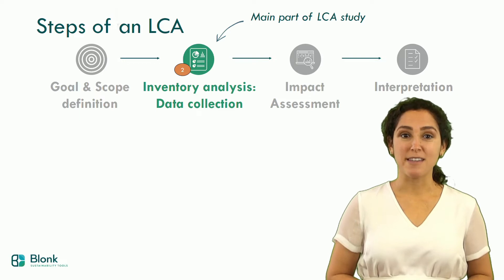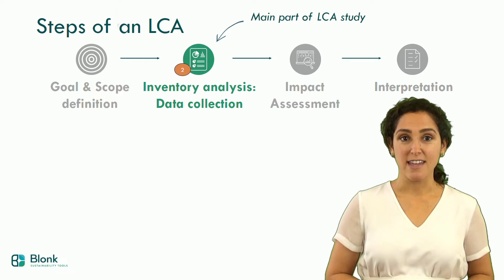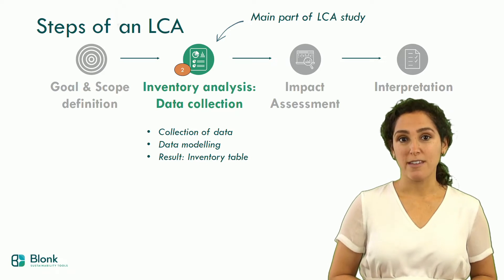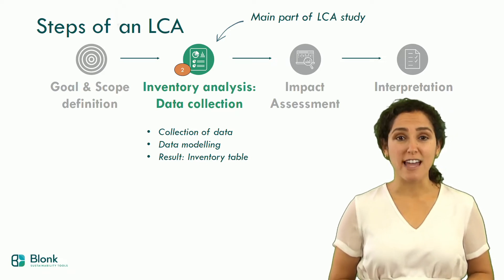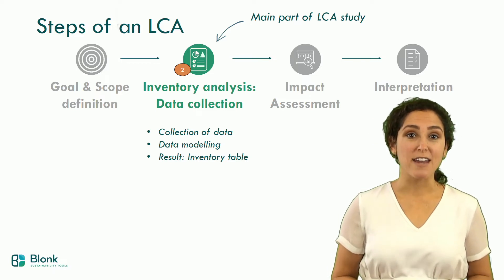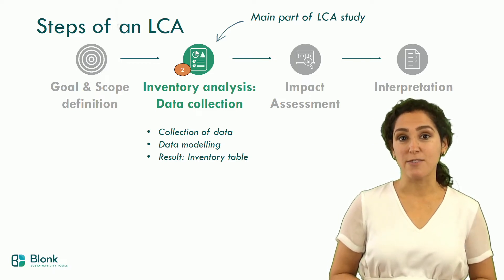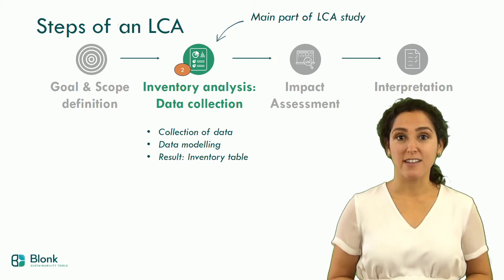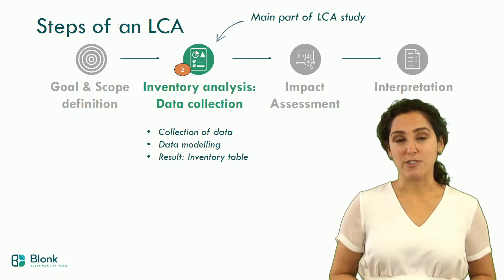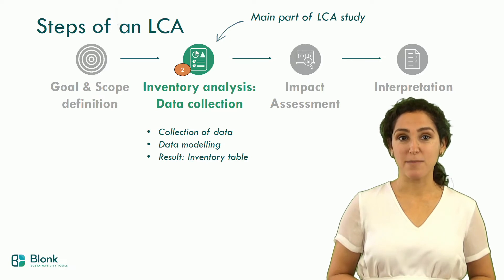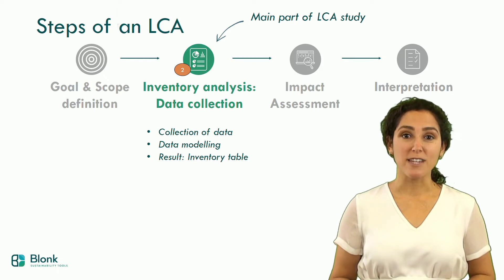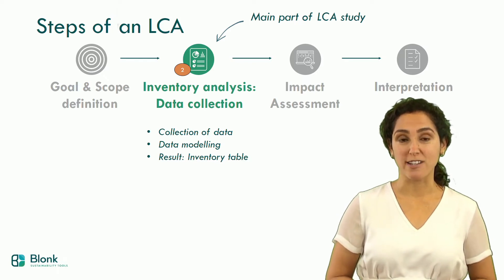The second step is the inventory analysis, which is the main part of an LCA study. In this step, data is collected, modeled, and recorded in an inventory table. Examples of data you might need include fertilizer data, pesticide data, water, and a measure of emissions and waste in developing the product. This data can be measured on the production site — called primary data — or it could be derived from literature or national statistics. The result of this step is an inventory table: an extensive list of environmental inputs and outputs for each product or process needed to produce the food product of interest.